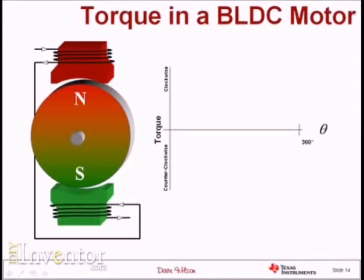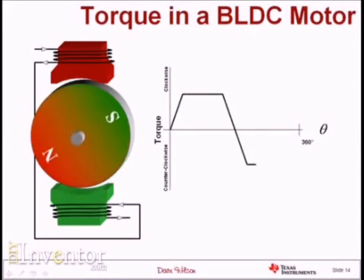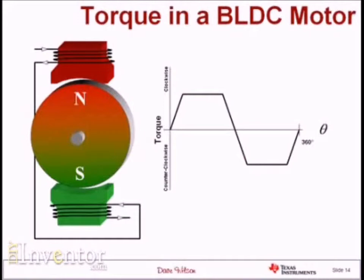I'm going to put a hand crank on this motor and essentially rotate it through 360 degrees as you can see here. I'm plotting the torque that the motor is generating as it's rotating. I'll tell you that I've never seen a motor with this beautiful of a torque waveform — it's almost impossible to achieve because you would need uniform flux density in the air gap, which no motor can achieve. But for the moment, let's just assume that's what we have.